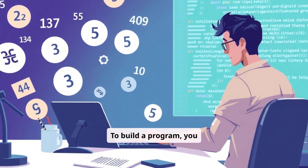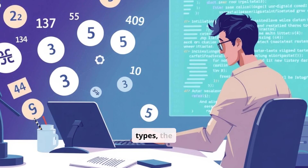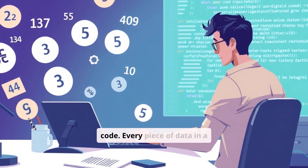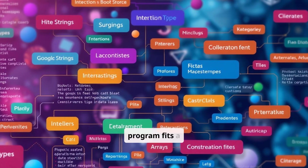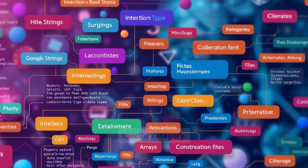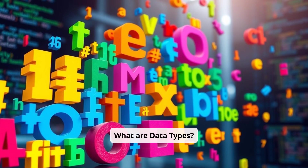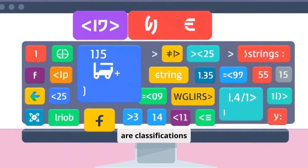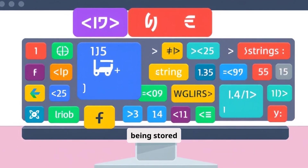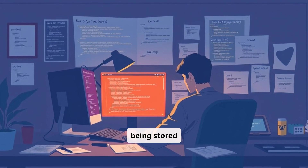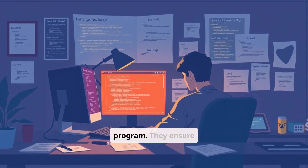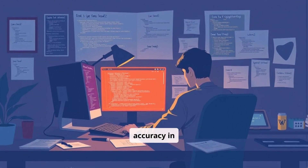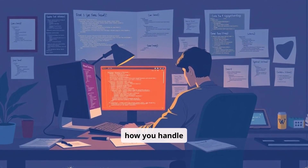To build a program, you first need to understand data types, the foundation of your code. Every piece of data in a program fits a specific category. Data types are classifications of the kind of data being stored and manipulated in a program. They ensure efficiency, organization, and accuracy in how you handle information.